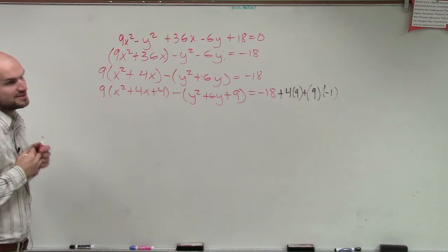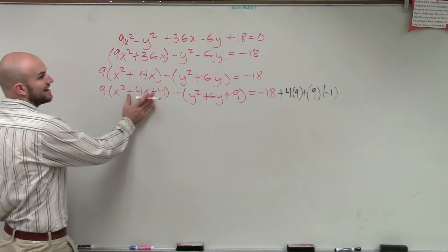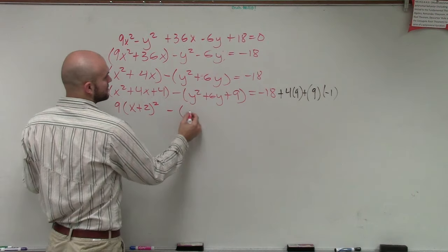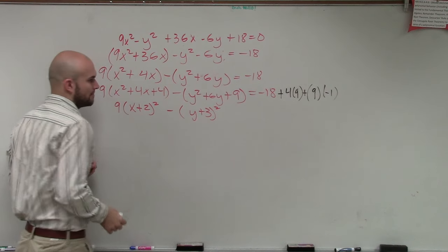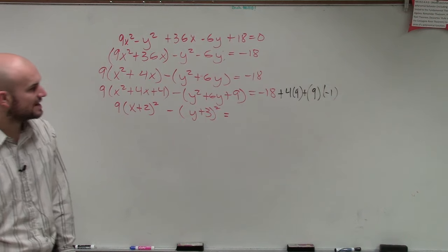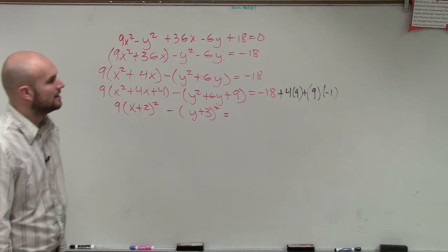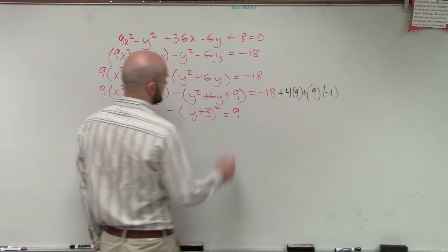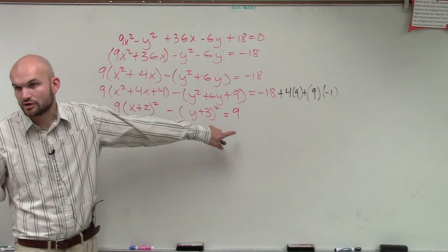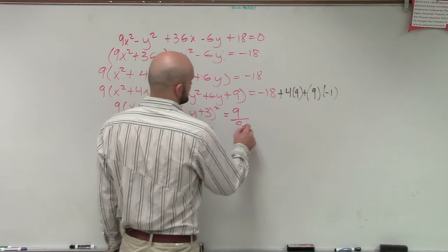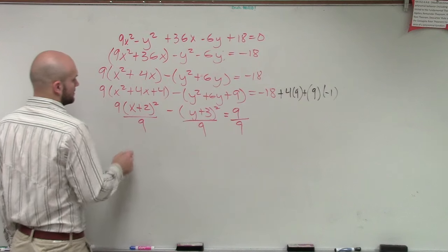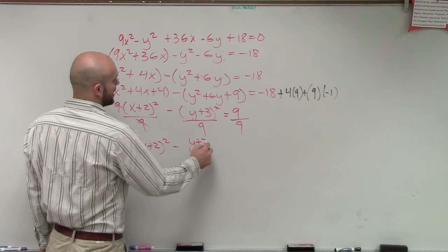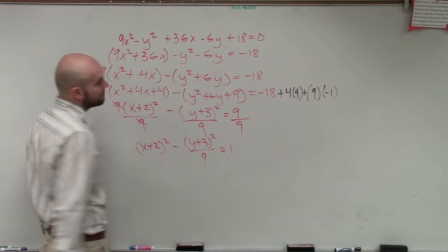So now let's factor this out: 9 times x plus 2 squared minus y plus 3 squared. On the right side I have negative 18 plus 36, which is positive 18, and then plus negative 9, which is negative 9. So that gives 9 total on the right. Now I divide by 9 so it equals 1, and I'm left with x plus 2 squared minus y plus 3 squared over 9 equals 1.